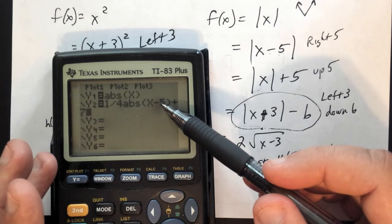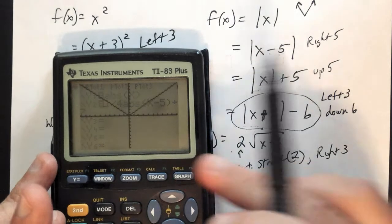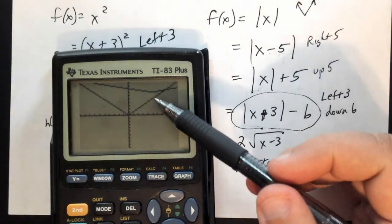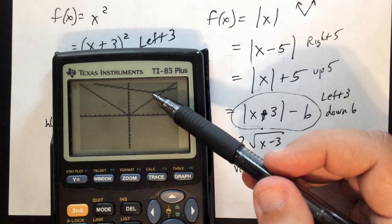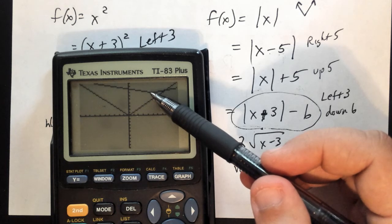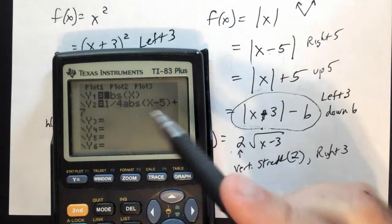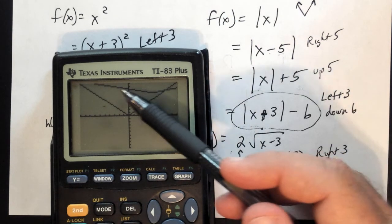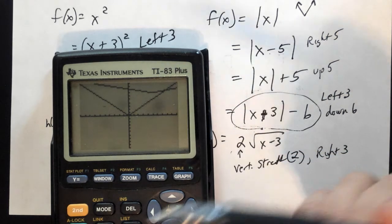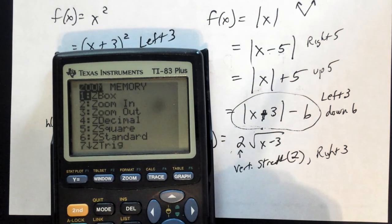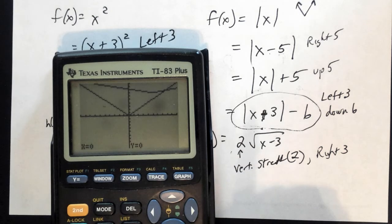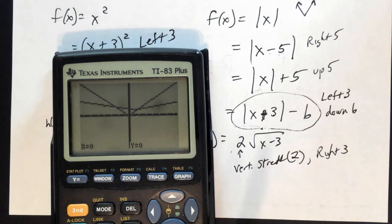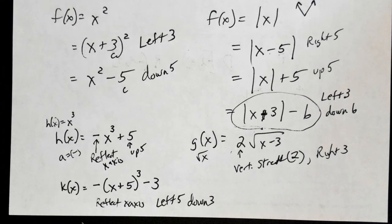The right 5 and up 7 shifts move the vertex to (5, 7). When we graph it, there's the original and the new one — notice the vertex is up here and the V is much more flattened out due to the vertical shrink. Zooming out you can clearly see the difference. Working with these on your calculator will be very helpful for understanding transformations.